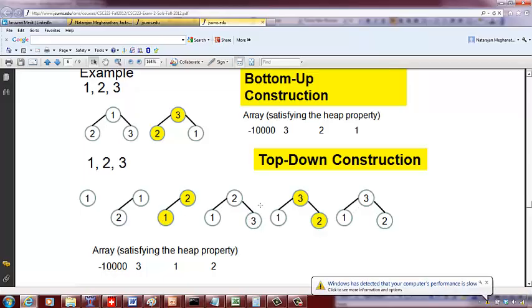Then you insert 3. It doesn't satisfy the heap property, so you move 3 up and bring 2 down. The result is 3, 1, 2, which is different from 3, 2, 1. This shows that the heap generated with top-down and bottom-up approaches need not be the same.